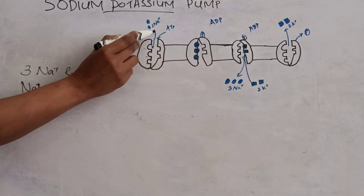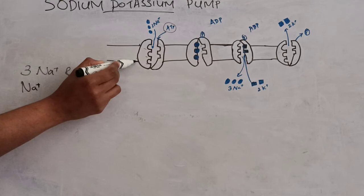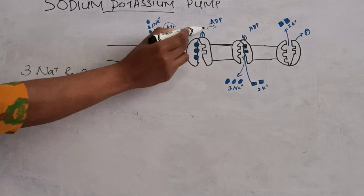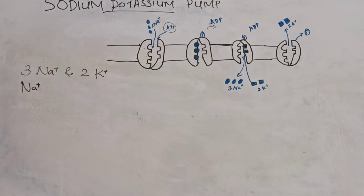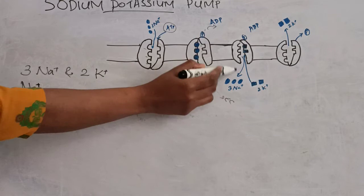When phosphate is transferred from the hydrolysis of ATP to the protein, ADP is released and phosphate is bound to the protein — this causes phosphorylation. This phosphorylation causes conformational changes in the pump, and these 3 sodium ions are released into the extracellular region.